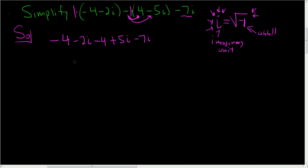Alright. The next step is to combine everything. So first we combine the real numbers. So negative 4 minus 4 is negative 8.